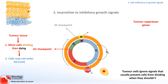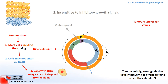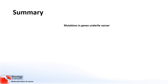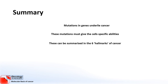In cancerous cells, mutations in the proteins that detect DNA damage and stop the cell from dividing cause these mechanisms to fail. This allows cells with mutations to enter the cell cycle and pass on their DNA to their daughter cells. In summary, we've learned that mutations in genes underlie cancer, and these mutations must give cells specific abilities. These can be summarised in the six hallmarks of cancer, the first two of which are self-sufficiency in growth signals and insensitivity to anti-growth signals.